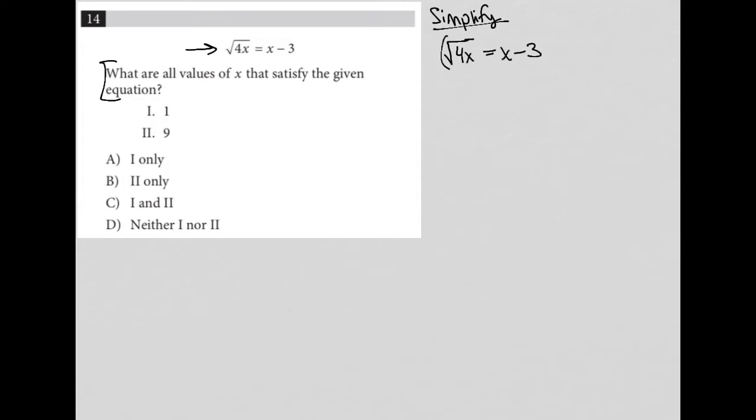I can do that by squaring both sides of this equation. I'd be left with 4x equals x minus 3 times x minus 3. Don't forget, you don't just distribute the 2 across. We have to actually write down the binomial twice.